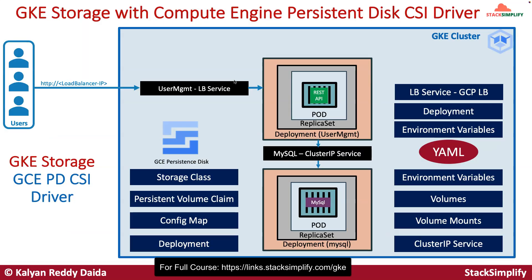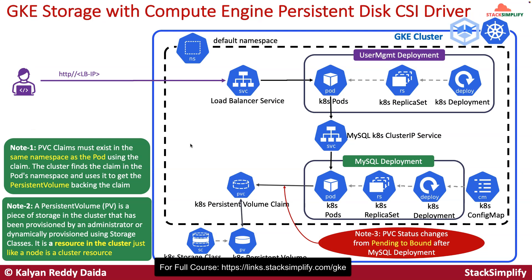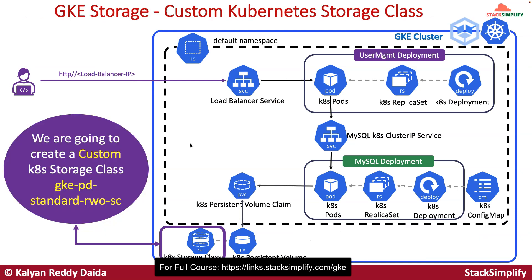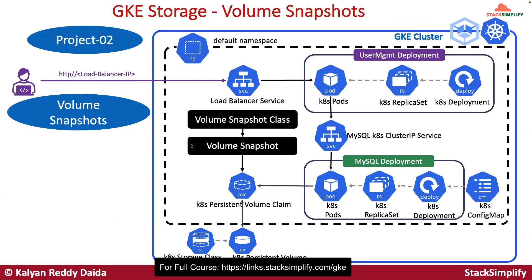From there, we will move on to implementing Kubernetes storage concepts: storage classes, persistent volume claims, and persistent volumes. We will implement these using a sample application called the user management web application, using the GCE PD CSI driver and GCE persistent disks as the storage backend. We have detailed architecture diagrams for these implementations. Once we implement and test it, we will also focus on how to take volume snapshots and implement volume snapshot concepts with persistent disk.